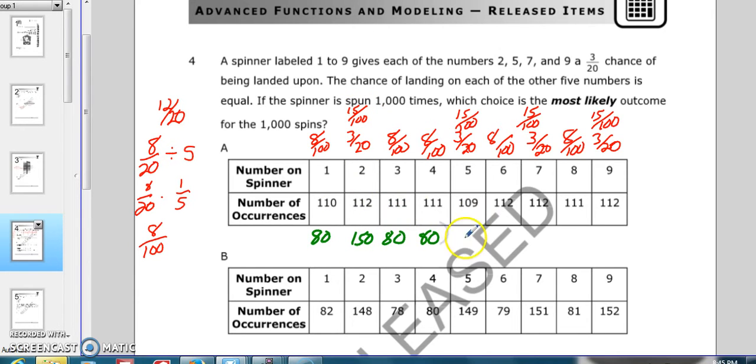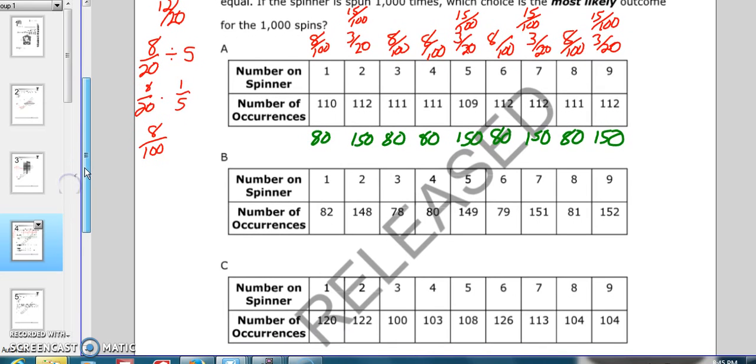150, 80, 150. Now, which of these tables shows us the closest thing to those numbers?